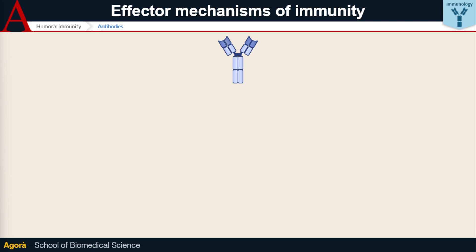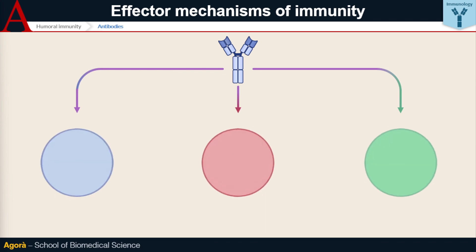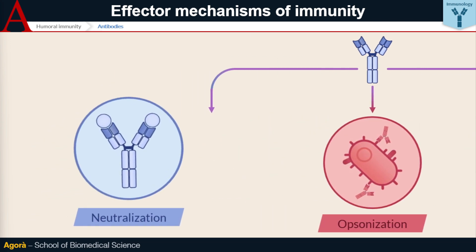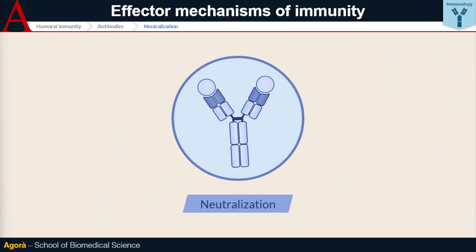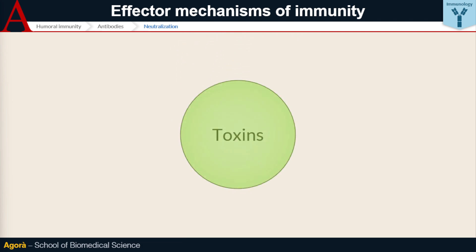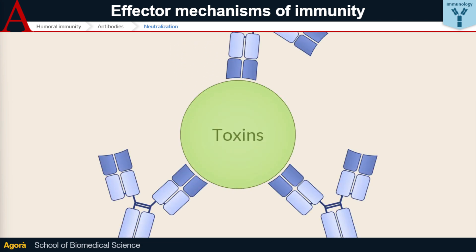But how do antibodies protect us from infection? Well, in at least three ways. First, neutralisation: antibodies are able to bind products of pathogens — for example bacterial toxins — or the pathogens themselves, and prevent their contact with the body's cells and thus their potential entry. In this way the pathogen, or its product, is neutralised.